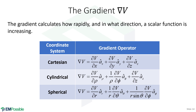We can express the gradient in Cartesian, cylindrical, and spherical coordinates. In Cartesian, the gradient of a scalar function V is the del operator applied to V: we take the partial derivative of V with respect to x in the x direction, the partial derivative with respect to y in the y direction, and the partial derivative with respect to z in the z direction. That is the gradient.